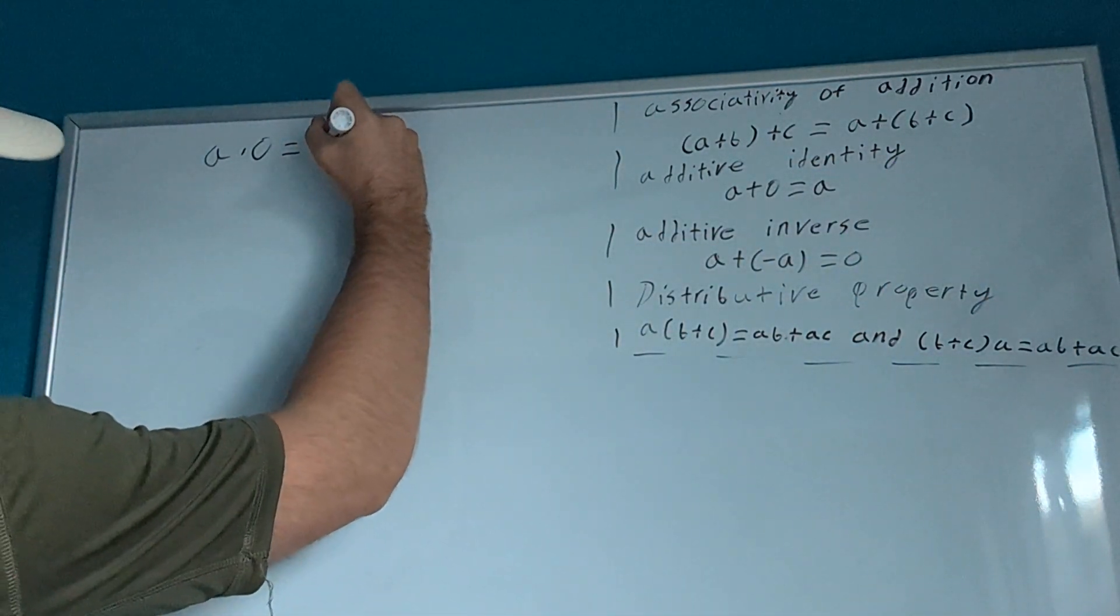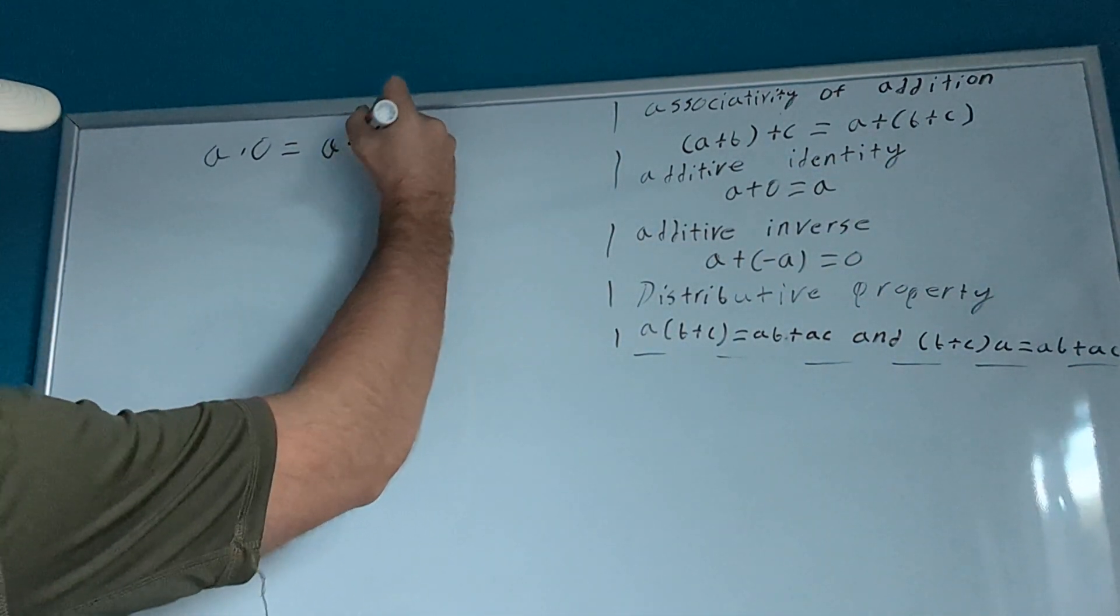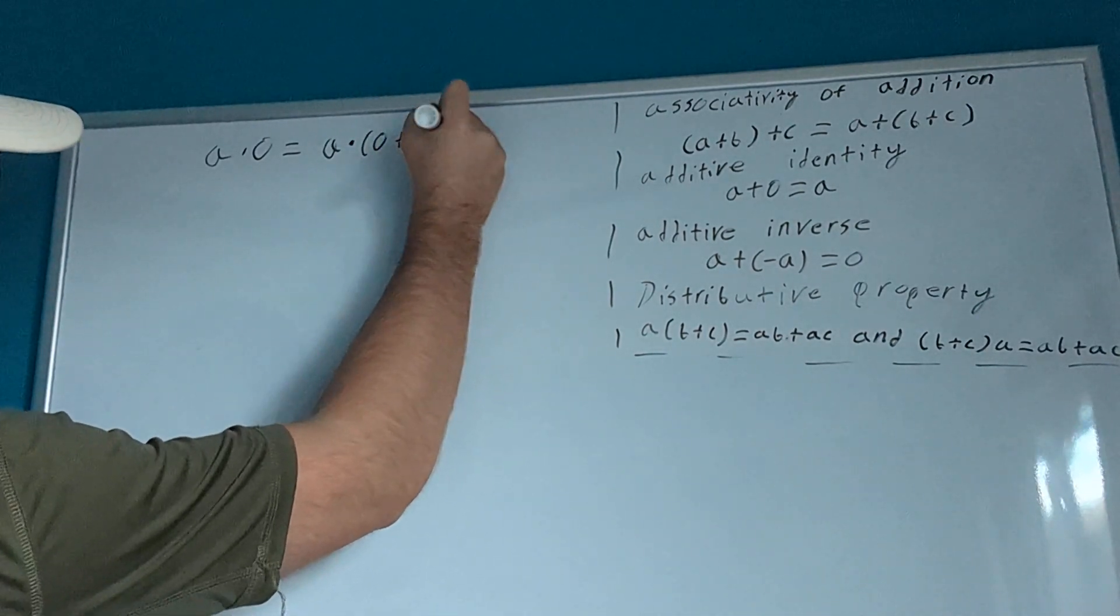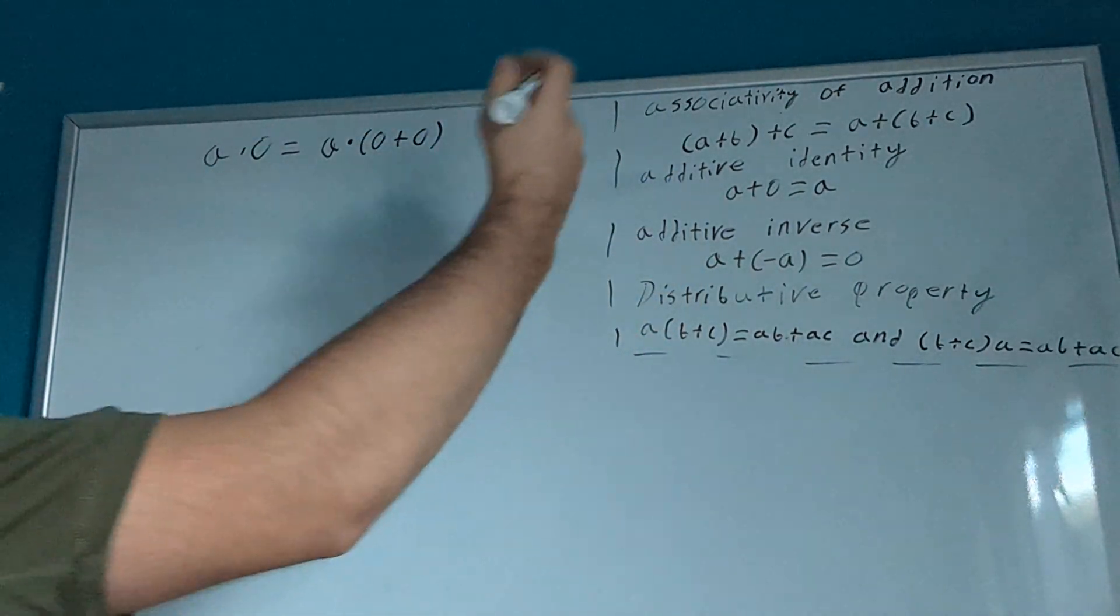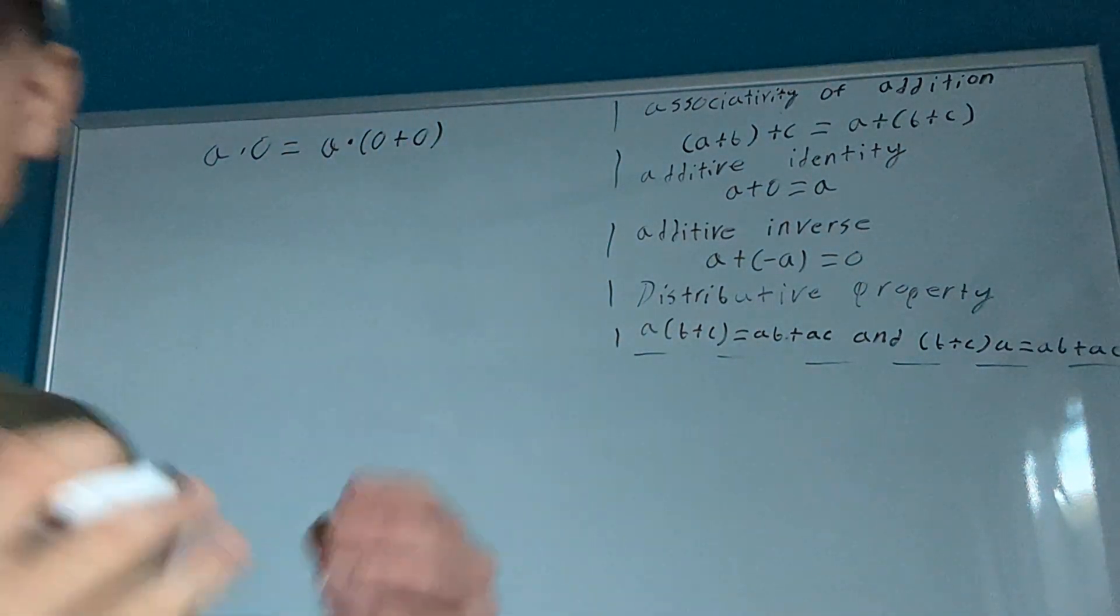So, then we can say this is the same thing as a times 0 plus 0. We use the additive identity. We added 0 on to 0, so it should still be 0.